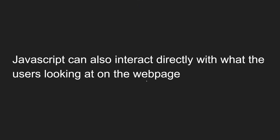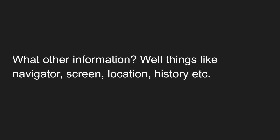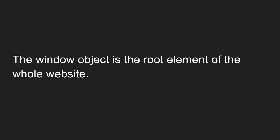JavaScript can also interact directly with what the user is looking at on the web page — that's the DOM. But there is also other information that the browser window provides. Window gives us access to the content of the web page, and other than that, the browser gives us through the window: navigator, screen, location, history, storage — including local storage and session storage. All these things are provided by the window object, and the window object is provided by the BOM.